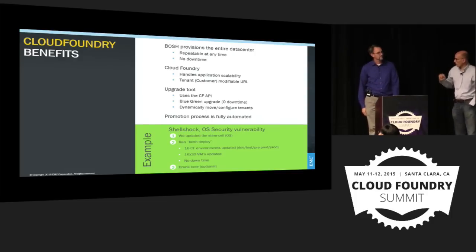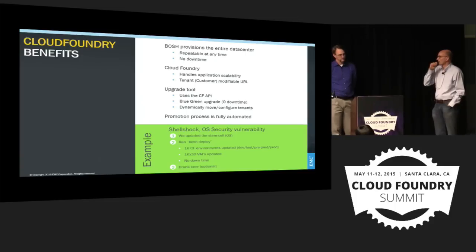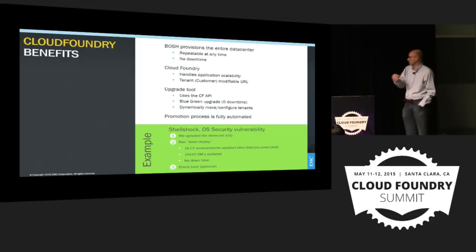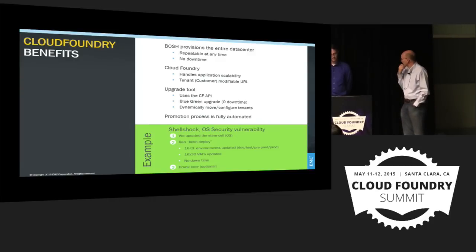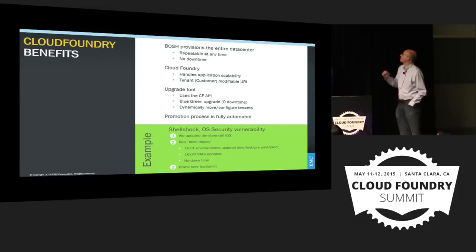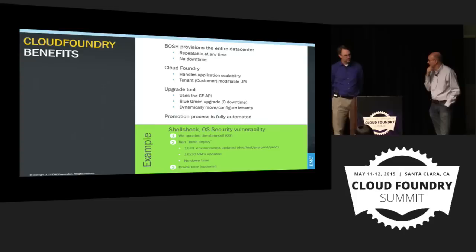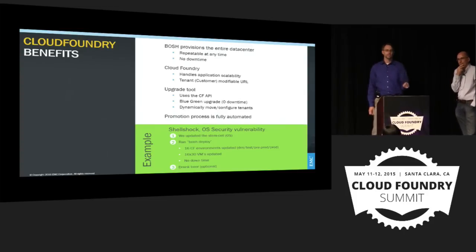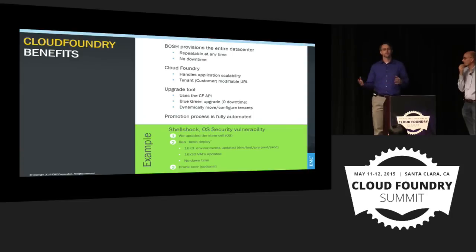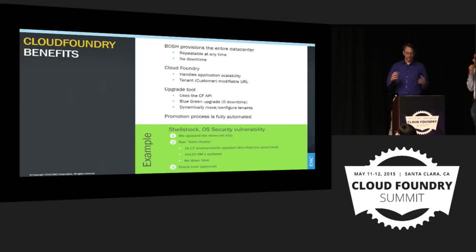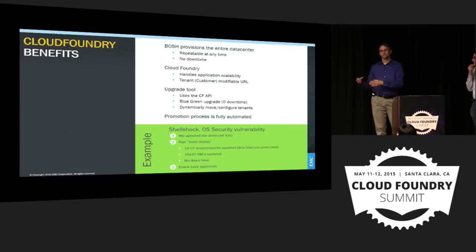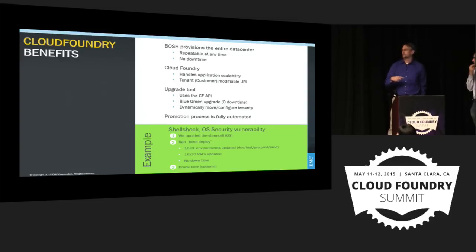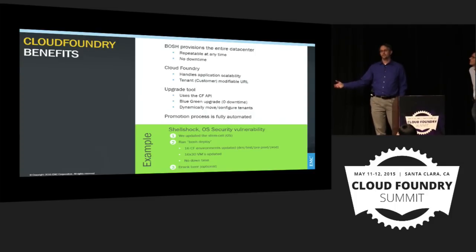We have 16 Cloud Foundry environments — a range of test environments plus pre-prod, integration pre-prod, and production. The beauty is that once we did it once in the first CF environment, CI tests ran automatically. An hour later we had a green build confirming everything worked on the new CI environment. We were highly confident all other environments would work. We took the manifest and stemcell, handed them down the line, ran BOSH deploy — it worked. Then the next environment, then the next. Once it worked in one, we knew it would work everywhere.